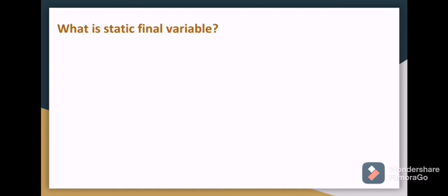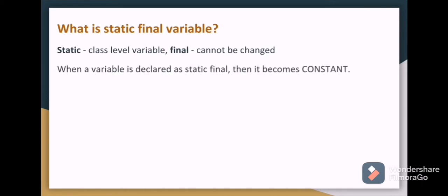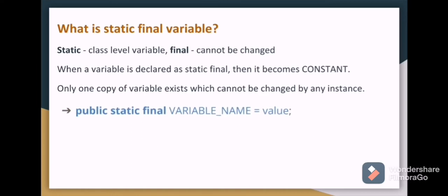What is static final variable? Static means a class level variable, final means it cannot be changed. If we apply that together then it becomes constant. That is only one copy of variable exists which cannot be changed by any instance. How we can create this constant? Public static final variable name equal to value.